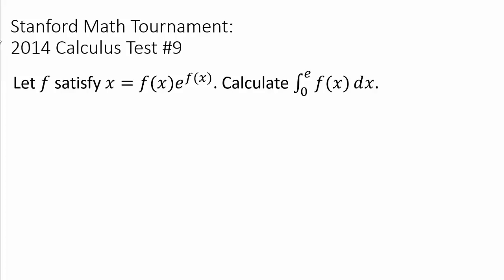Let's try out another wonderfully created problem from the 2014 Stanford Math Tournament. We have a function f satisfying x equals f(x) times e to the f(x), and we want to calculate the integral from 0 to e of f(x) dx. This is pretty awkward because we have x in terms of f(x), not the other way around.